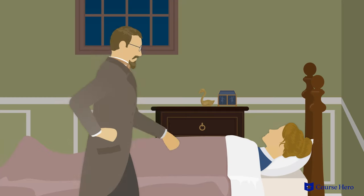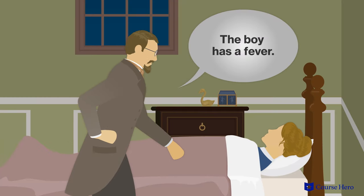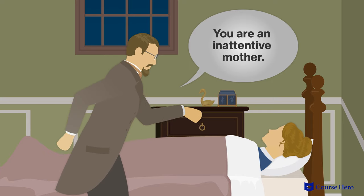Later, after Edna is asleep, her husband returns. One of their sons tosses restlessly in his bed. Deciding the boy has a fever, Mr. Pontellier becomes upset and implies Edna is a neglectful mother.